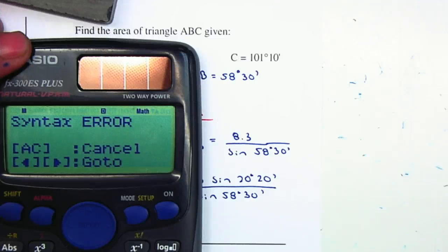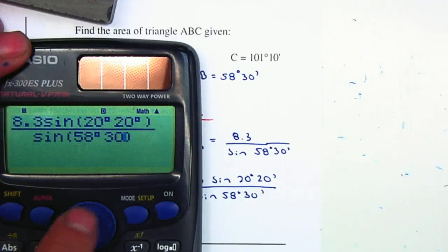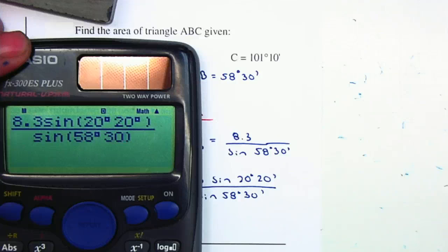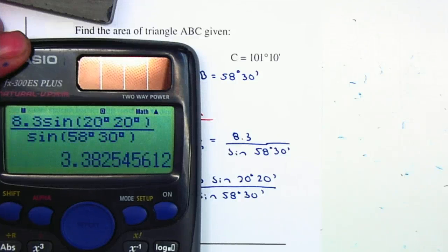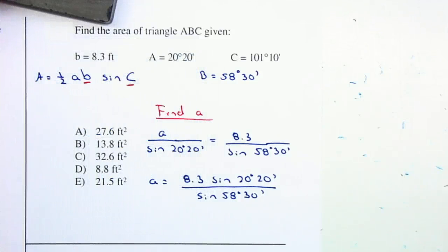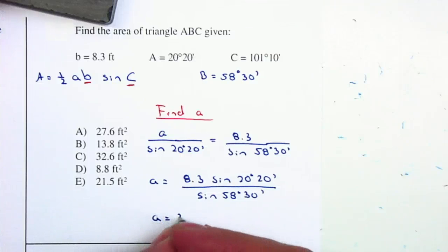It gives me an error. Let's see what happened. I forgot to paste that minute. That gives me 3.38, so therefore A equals 3.38.